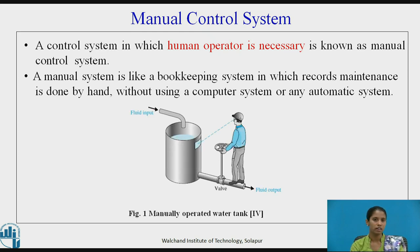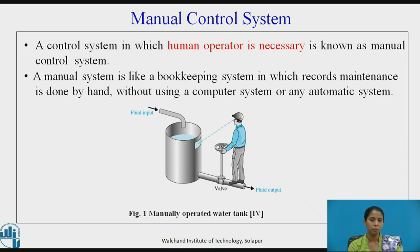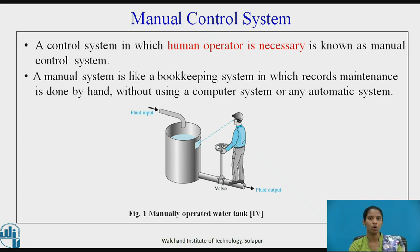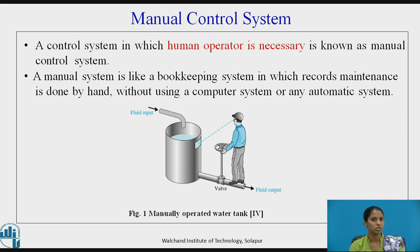Let us take an example of a manually operated water tank. As you see in the figure, a man or operator is required to see the water level and then, depending on that, he has to turn the valve on or off. So here a man is compulsorily required for the operation of the system.